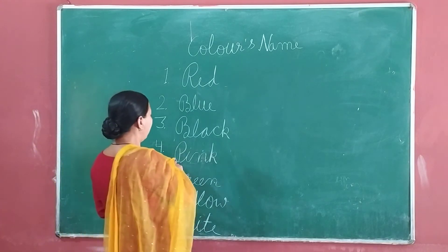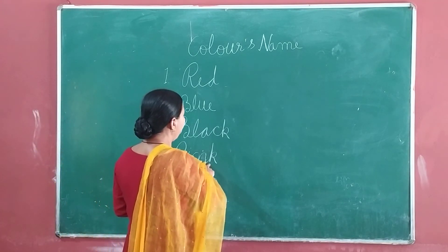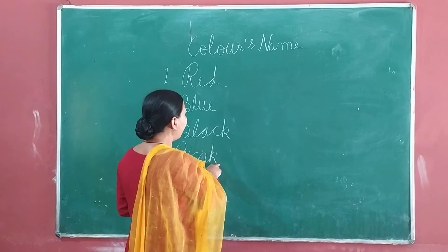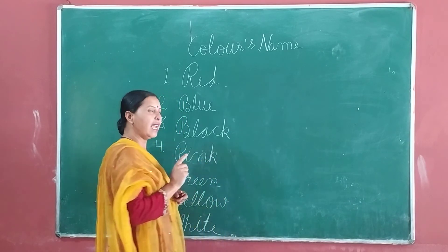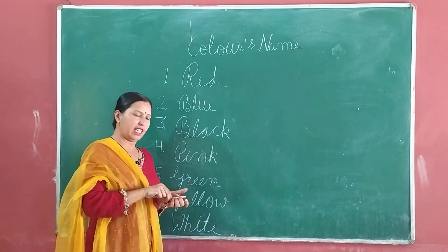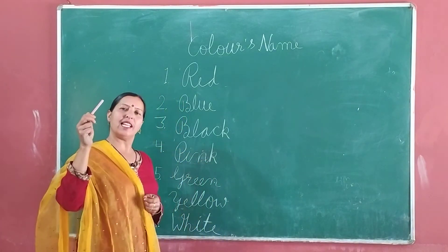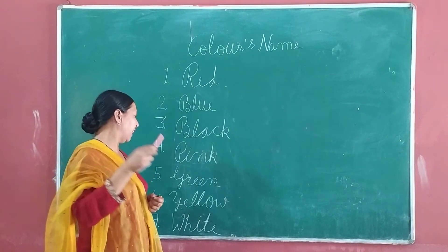Next, P-I-N-K. Pink means Kula B. Why do you think what colour is Kula B? Okay.